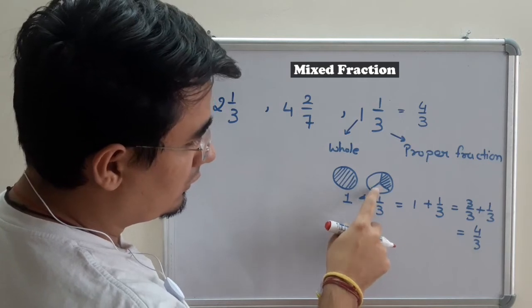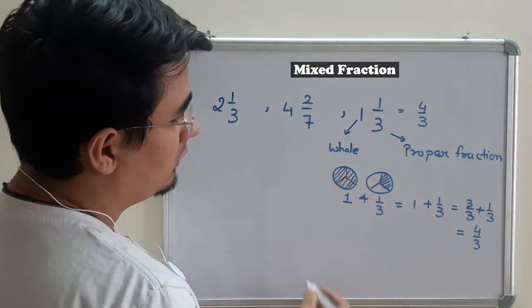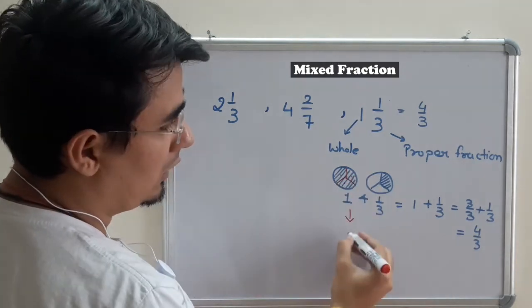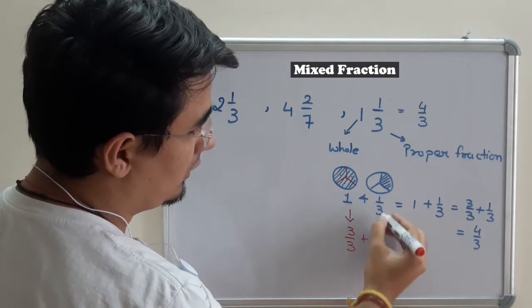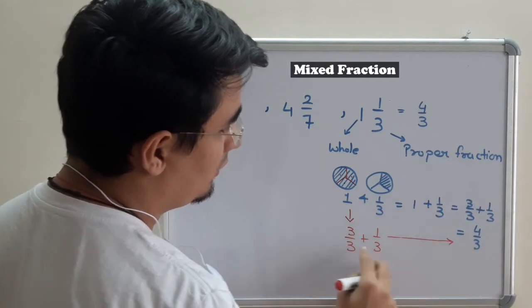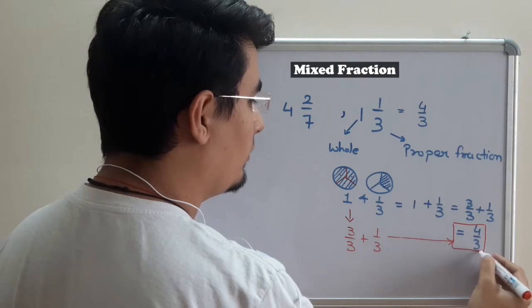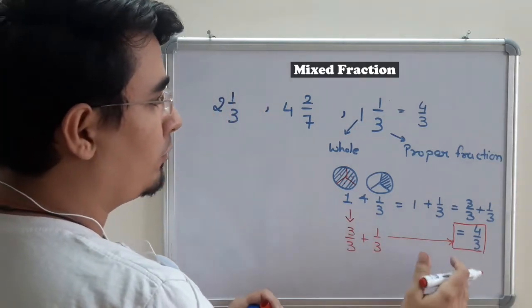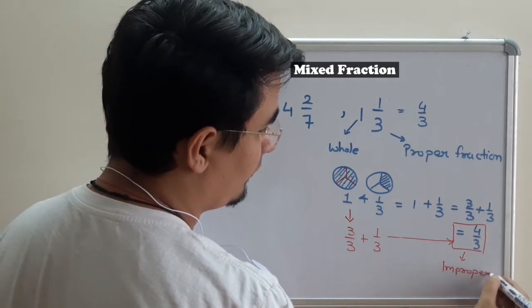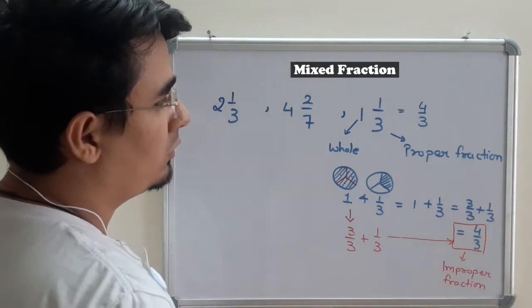How do I get 4 upon 3 from the visual way? I divide this pizza in 3 equal parts. So I have 3 out of 3, and here I have 1 out of 3. So 3 plus 1 is 4 out of 3. Either way, the answer is improper fraction, that is 4 upon 3.